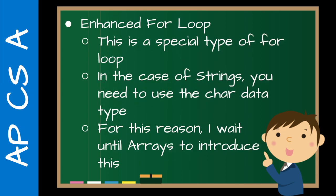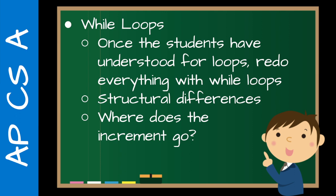Enhanced for loop — this is not really something I do here in the string unit, but I do mention it. It's a special type of for loop in which you don't use indices but you still iterate through from start to finish. However, in the case of strings you need to use the char data type, and since that's not on the AP, I don't really talk about it here too much. For this reason, I wait until the arrays unit to introduce this topic. All I talk about is for loops — we get the idea of iteration, we get the idea of traversal, we do counting, filtering, all these sorts of different things.